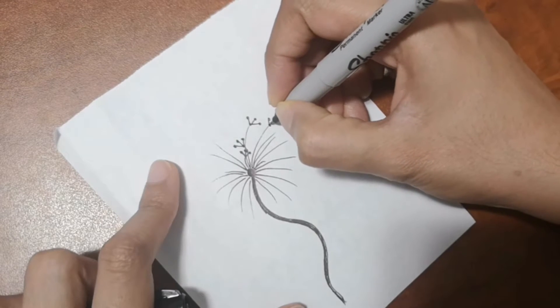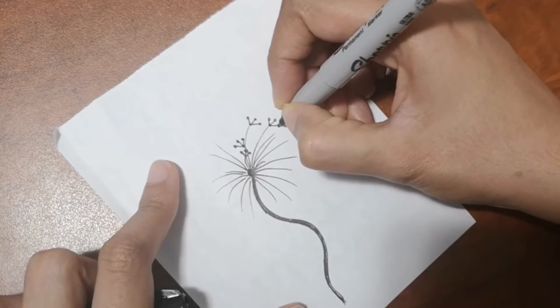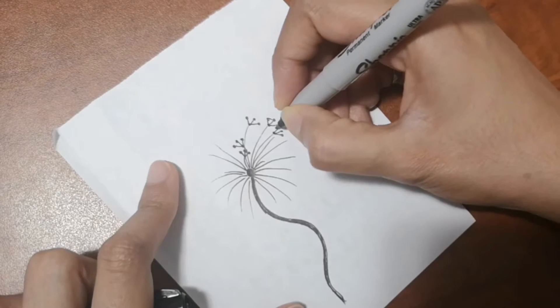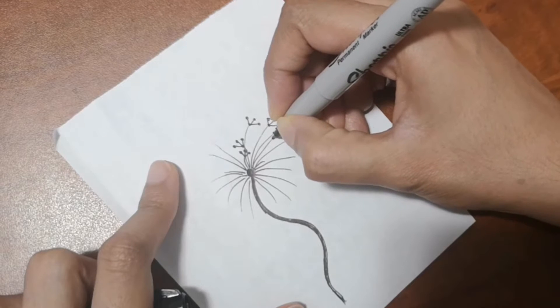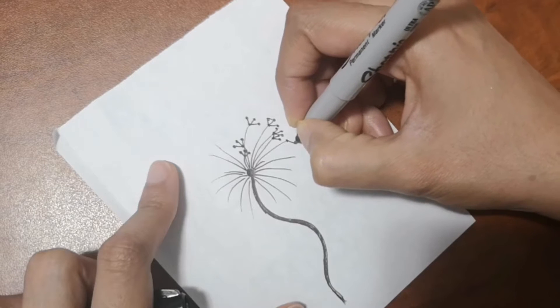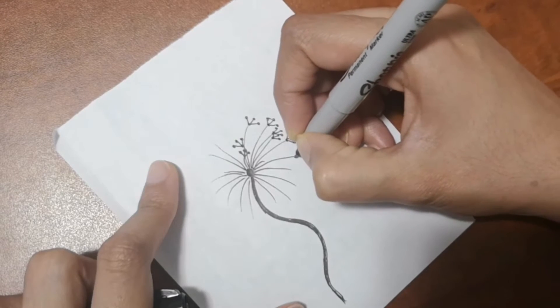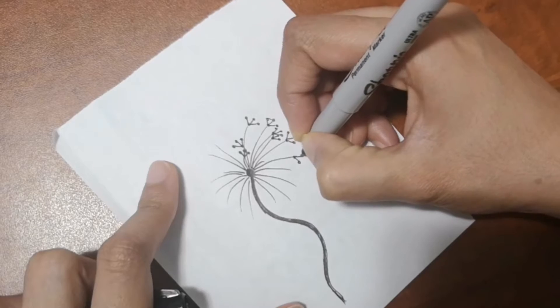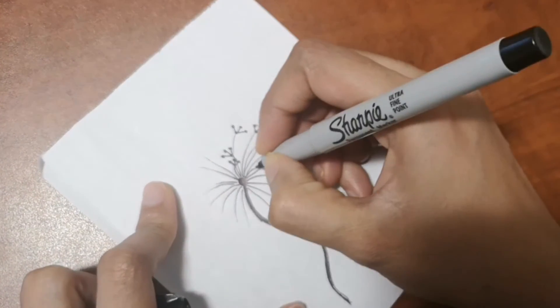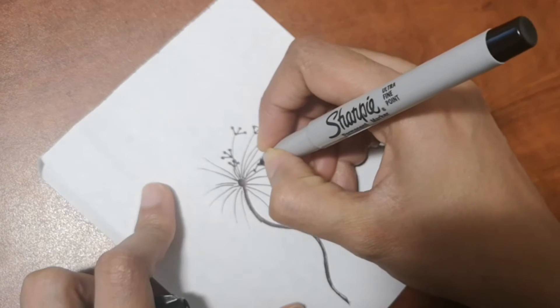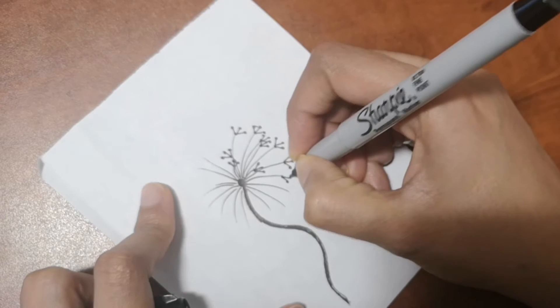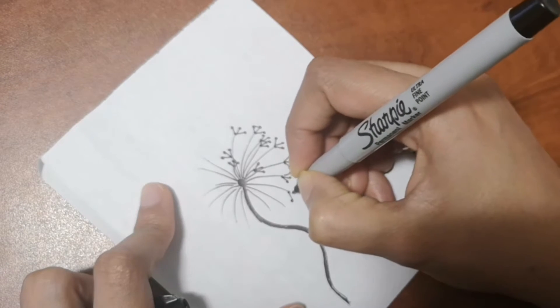You just have to draw these three little lines with the dots all around the dandelion, like the middle part. Draw these lines in a circular motion, and then where the line ends, add the three dots and the three lines. Keep doing that until you are satisfied and you get this whole rounded dandelion look.